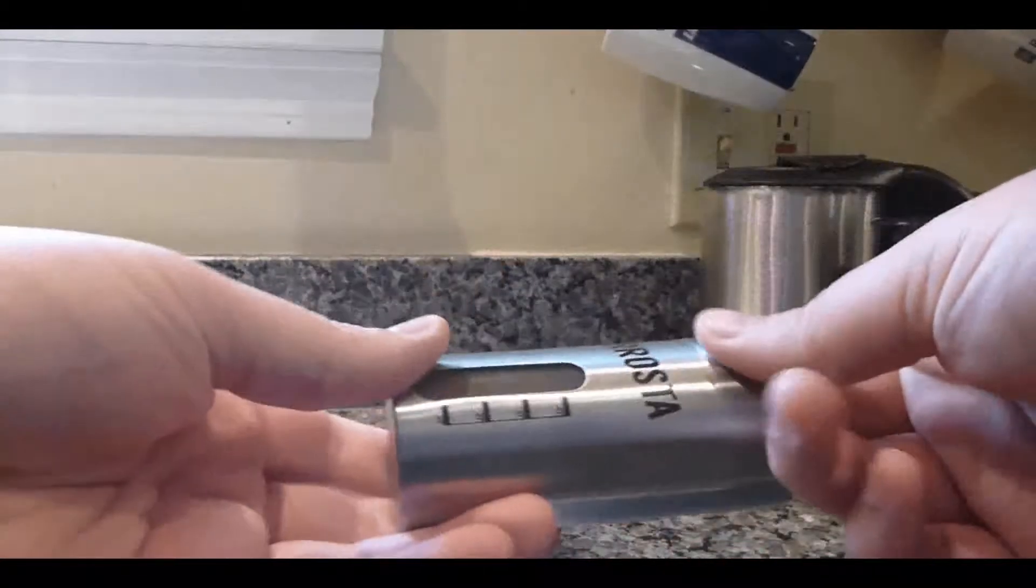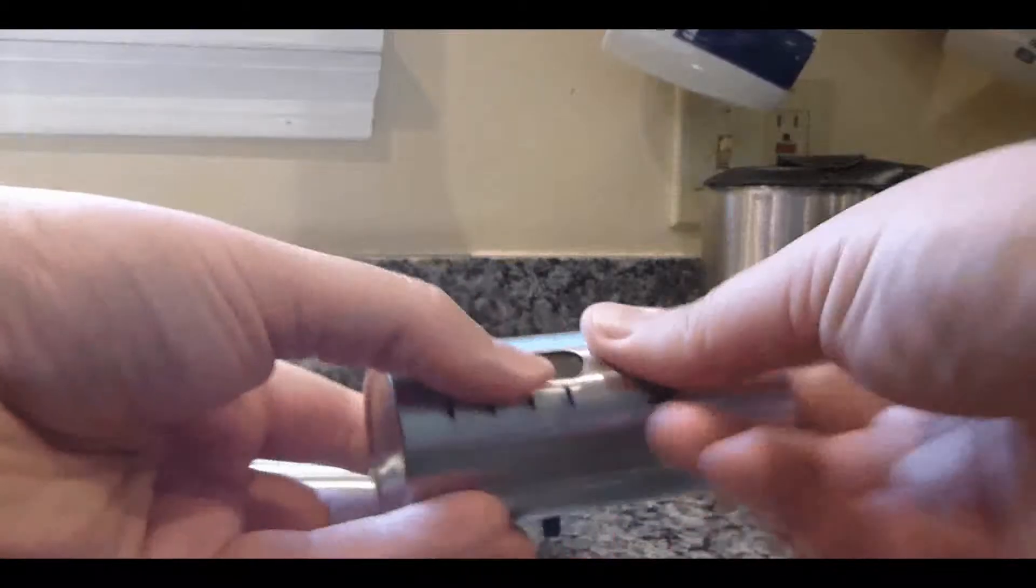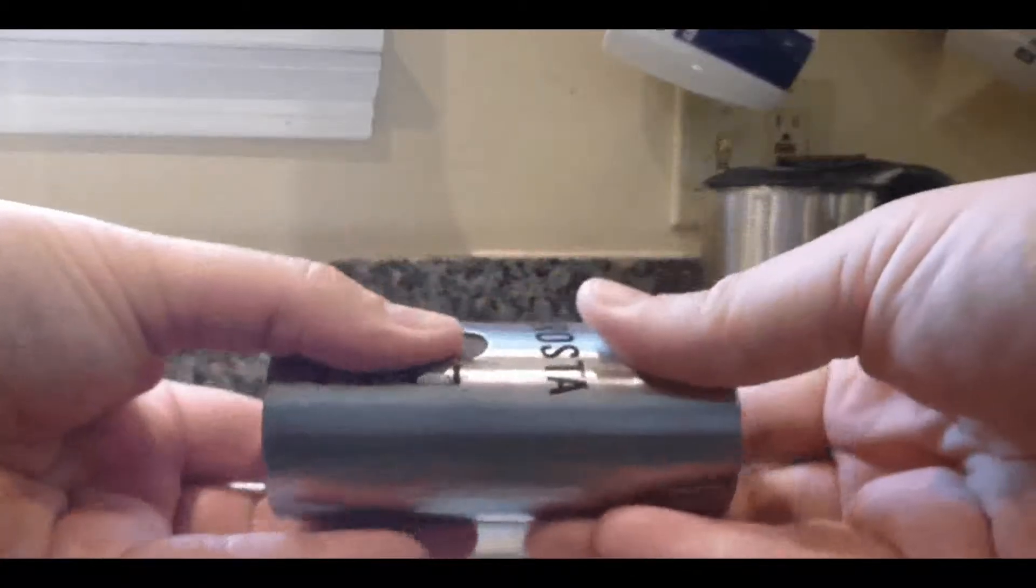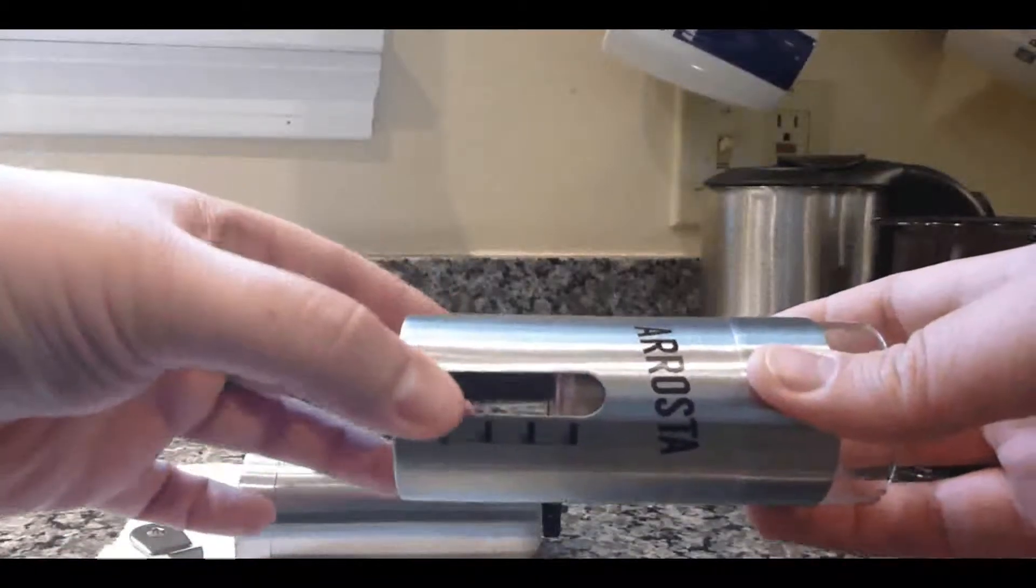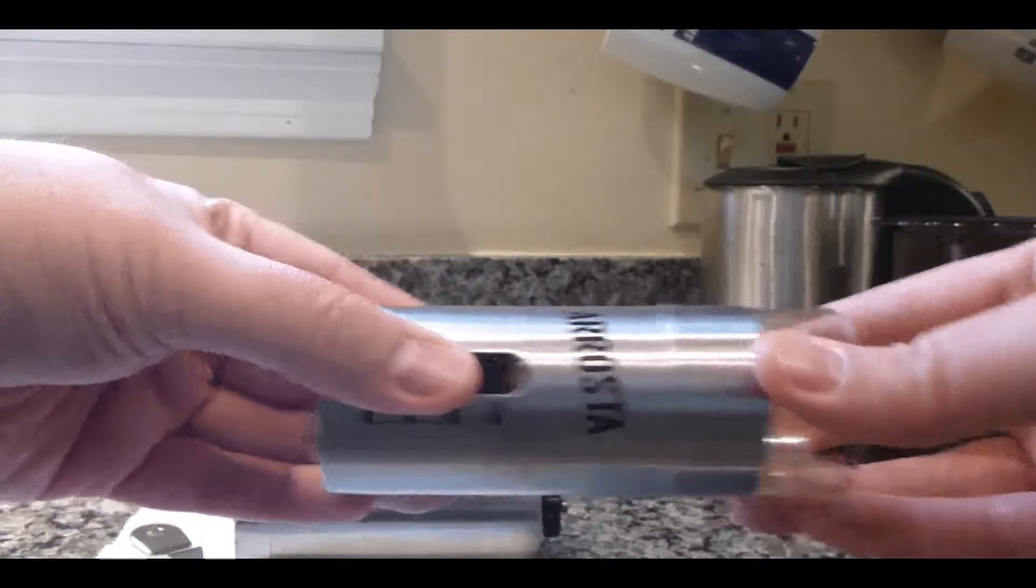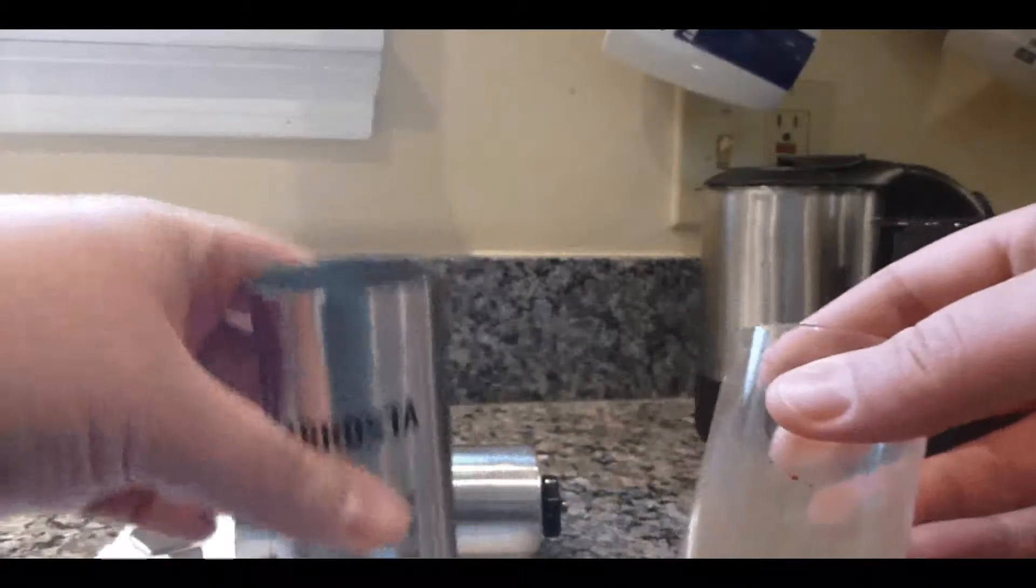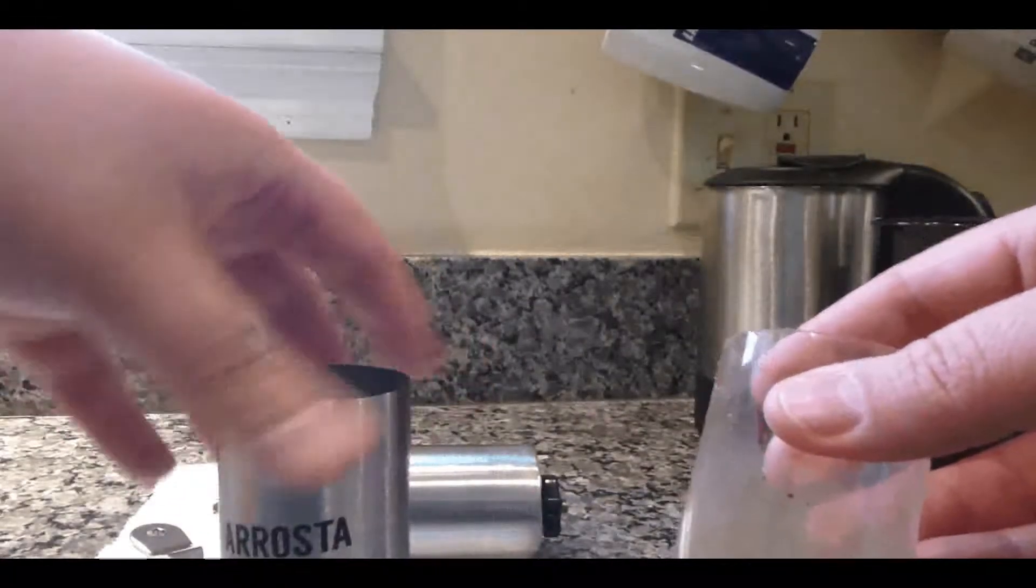We can see that our bottom grind catcher section has a plastic cup that we can remove by gripping it in these two openings and pushing up with slight pressure. Now this stainless steel portion should be relatively clean.